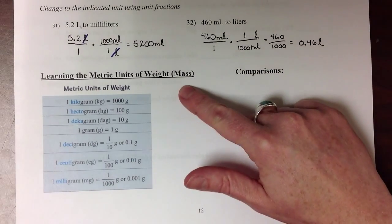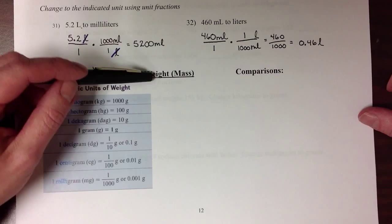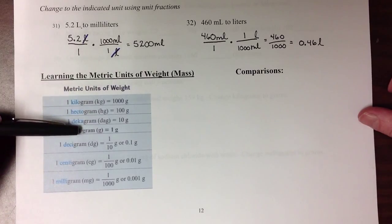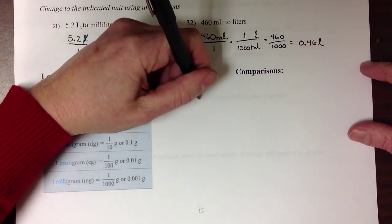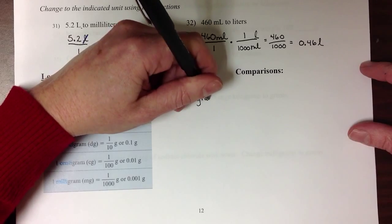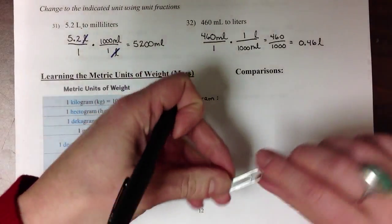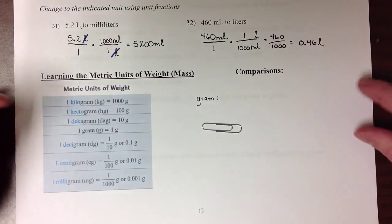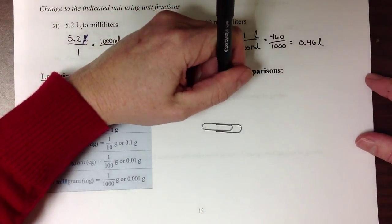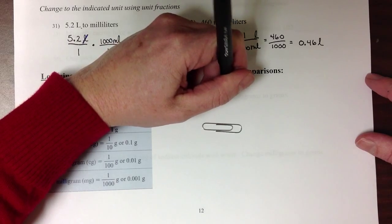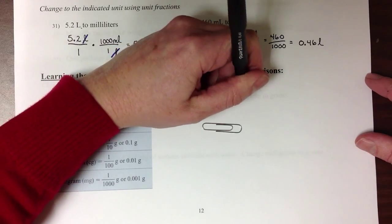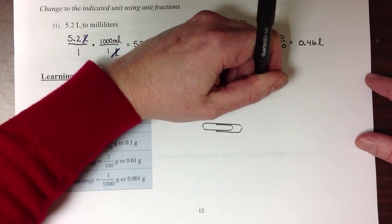So our basic unit of measurement in the mass category would be the gram. And a gram weighs about as much as this little paper clip. So a small paper clip is the mass of a gram.